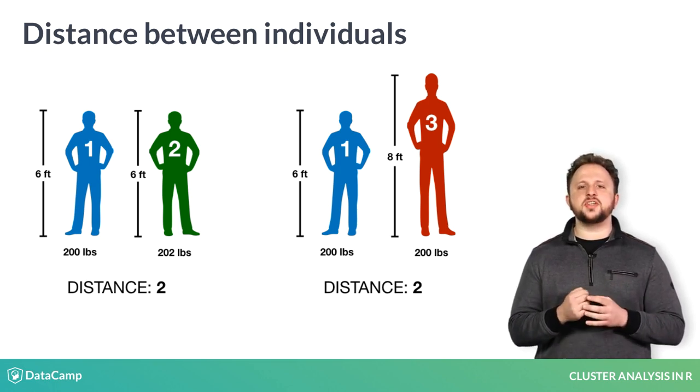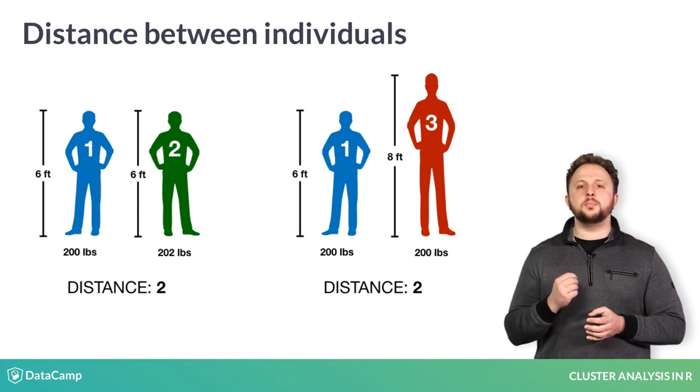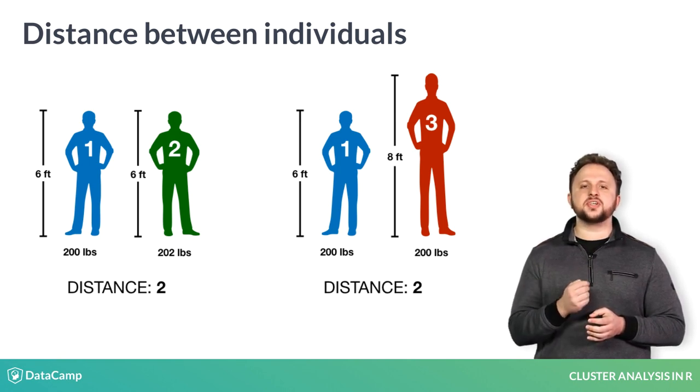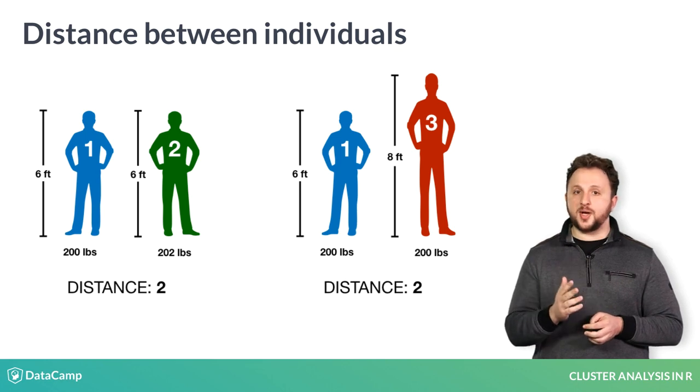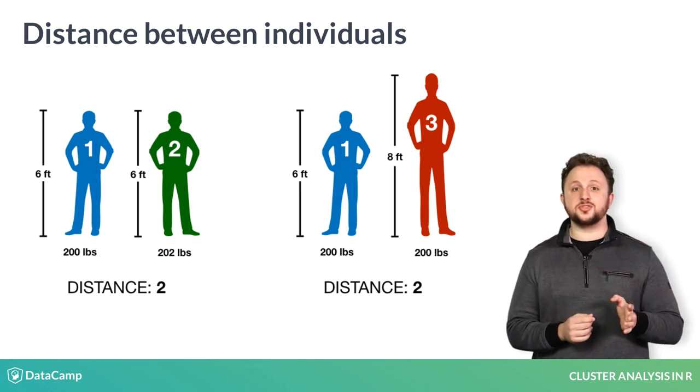This happens because these features are on different scales, meaning they have different averages and different expected variability. While in these comparisons, these features only vary by a magnitude of two, we intuitively know that a change in two pounds is very different than a change in two feet.